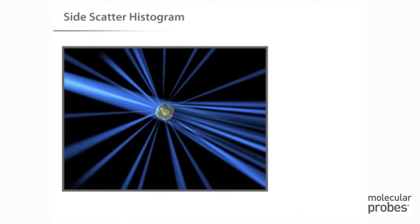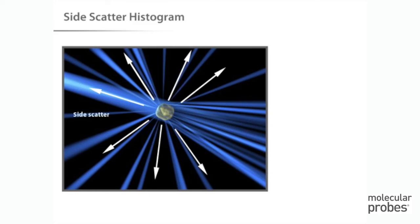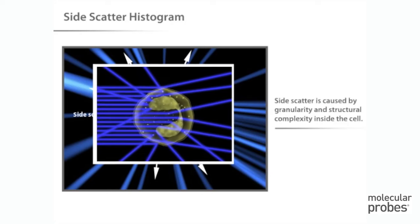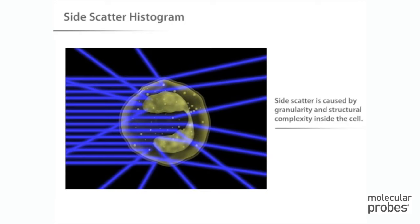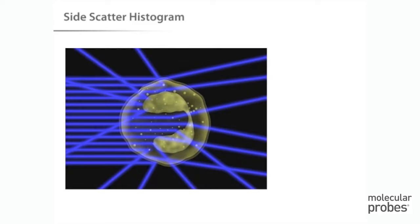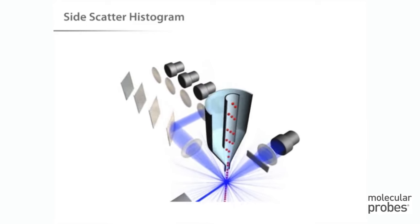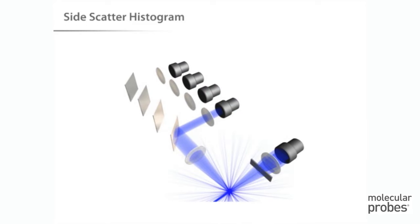As we have already seen, a cell traveling through the laser beam will scatter light at all angles. Light scattering at larger angles, for example to the side, is caused by granularity and structural complexity inside the cell. This side scattered light is focused through a lens system and is collected by a separate detector, usually located 90 degrees from the laser's path.